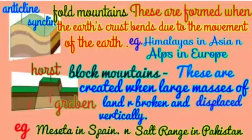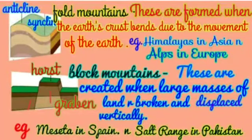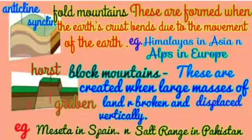The second type is block mountains. Block mountains are created when large masses of land are broken and displaced vertically. The uplifted part of the land is called a horst, and the subsided part is called a graben. The subsided parts are also referred to as rift valleys — for example, the Rhine valley located between the Vosges and the Black Forest. Examples of block mountains include the Meseta in Spain and the Salt Range in Pakistan.